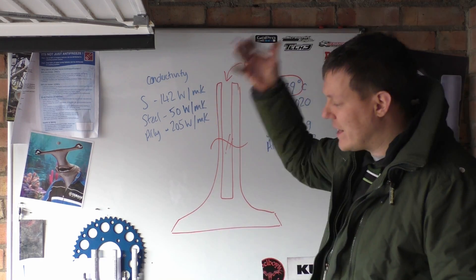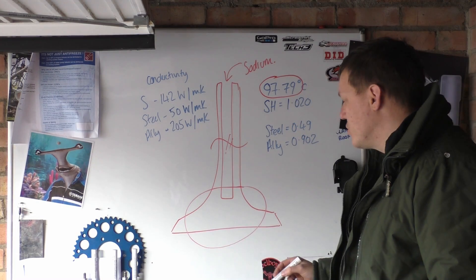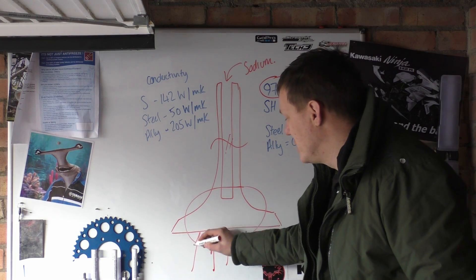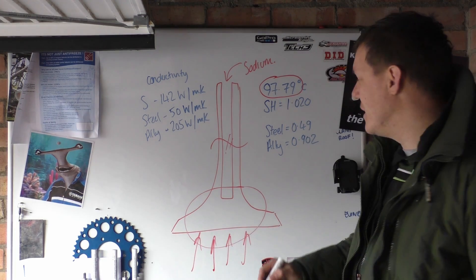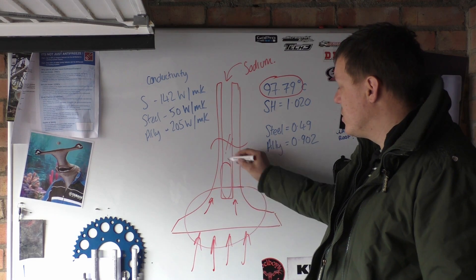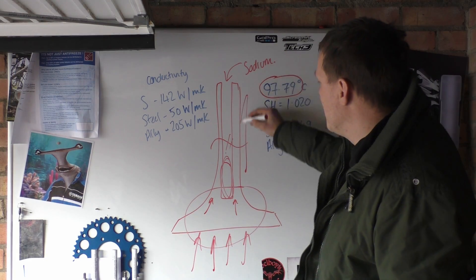As the valve rattles up and down, this end of the valve is where we're worried about. This is where the combustion occurs and where all the heat is generated. So the heat starts to creep up into the valve, and then this sodium that's here, as the valve opens and closes, basically just flops up and down because it's now a liquid.